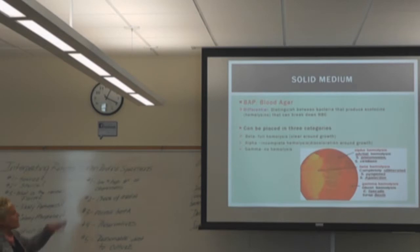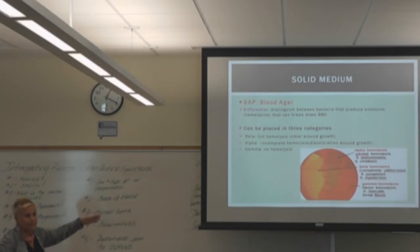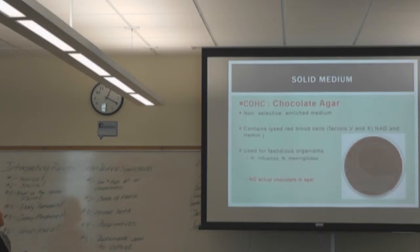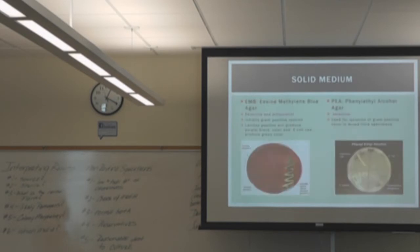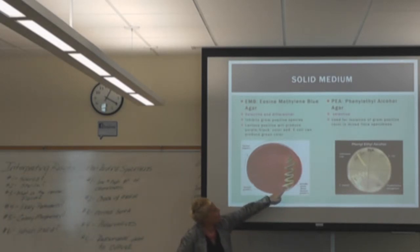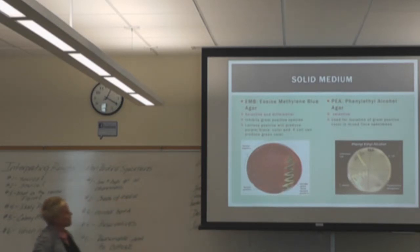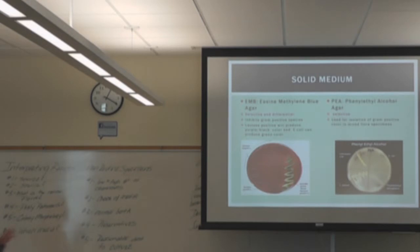BAP shows all the different hemolysis types — alpha, beta, and gamma — make sure you know those for the exam, it's a basic question. Chocolate agar — there's no actual chocolate in it; it's just lysed red blood cells, which is why it turns a chocolate color. It contains factors X and V, so Haemophilus influenzae and Neisseria meningitidis grow well on it. EMB and PEA are selective and differential. Our PEA plates look different because we have 5% sheep's blood in ours.